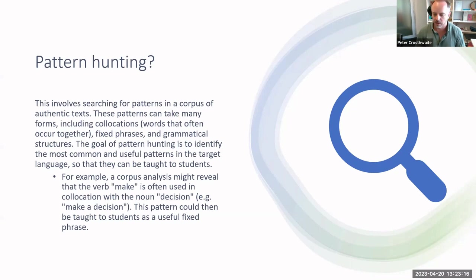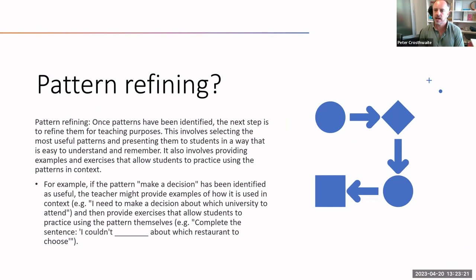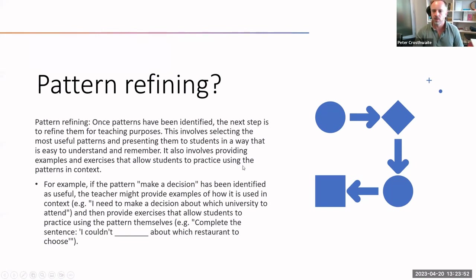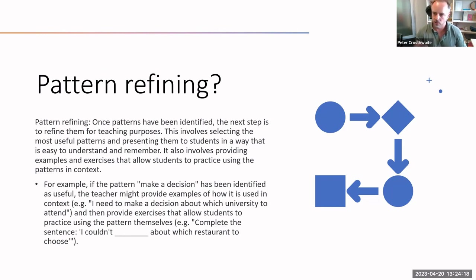Pattern refining takes that original pattern and extends the context — once identified, students refine it, seek alternatives, and see how those alternatives work. For example, if 'make a decision' has been identified as useful, the teacher might provide examples of how it's used in a certain context and then provide exercises for students to practice using the pattern themselves, playing around with different situations of use, registers, or individual nouns and verbs in the construction.